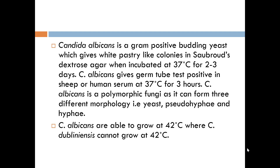One distinguishing feature of Candida albicans is that it produces a positive germ tube test. Another species, Candida dubliniensis, also gives a positive germ tube test, but you can separate them using the temperature tolerance test. Candida albicans can grow at 42°C whereas Candida dubliniensis cannot.